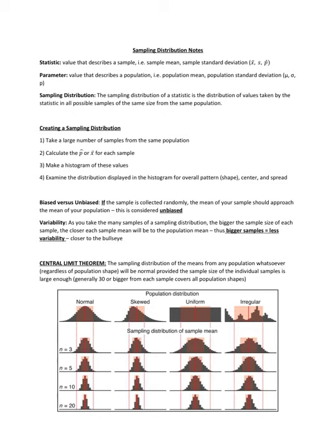Sampling distributions are really a gateway for scenarios where the population data is not normally distributed. Without sampling distributions, a lot of what we work with in statistics would be in a much different light, because sampling distributions is really about the process of getting non-normal distributions reshaped to be normal. We'll talk about how that process works here in this overview.